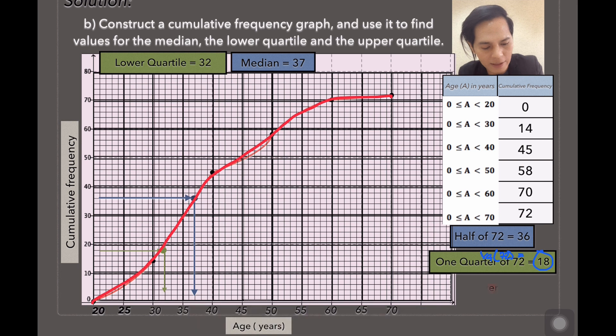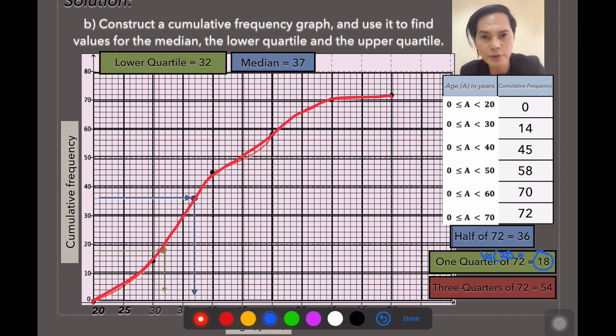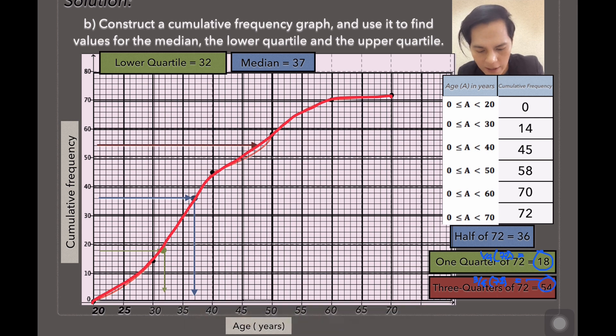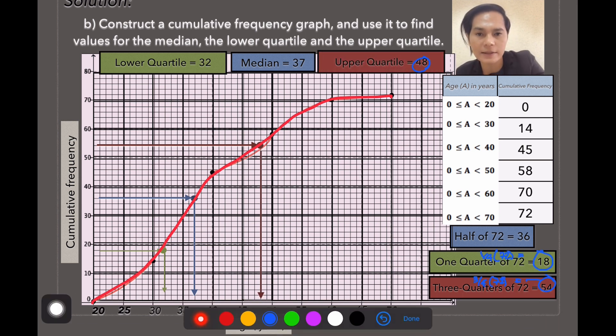And the upper quartile is just three-quarters or three-fourths of 72, which is 54. Check in the data, 54 there is 48. Therefore, the upper quartile is 48. So that's how you do that.